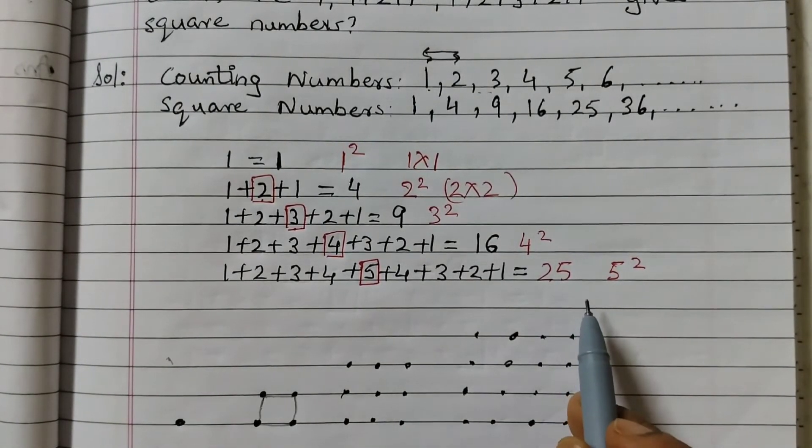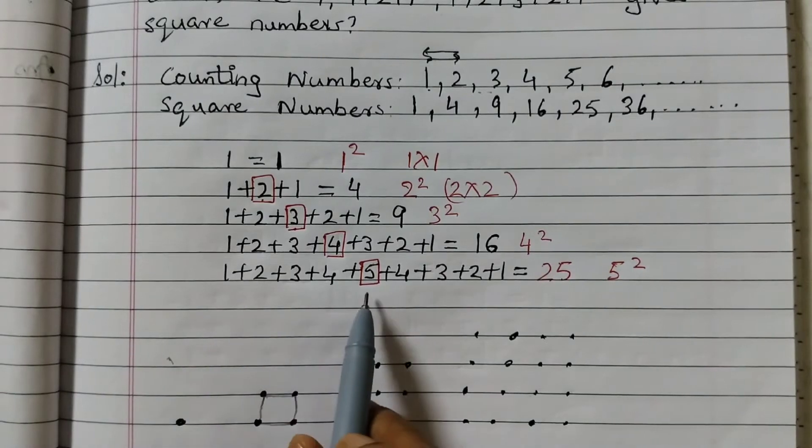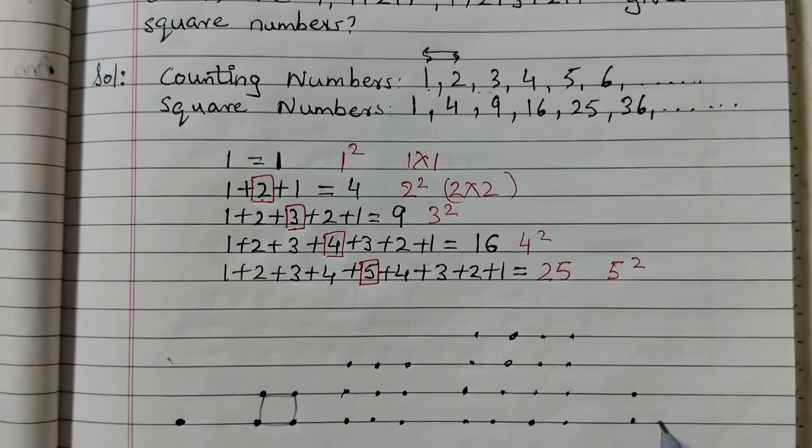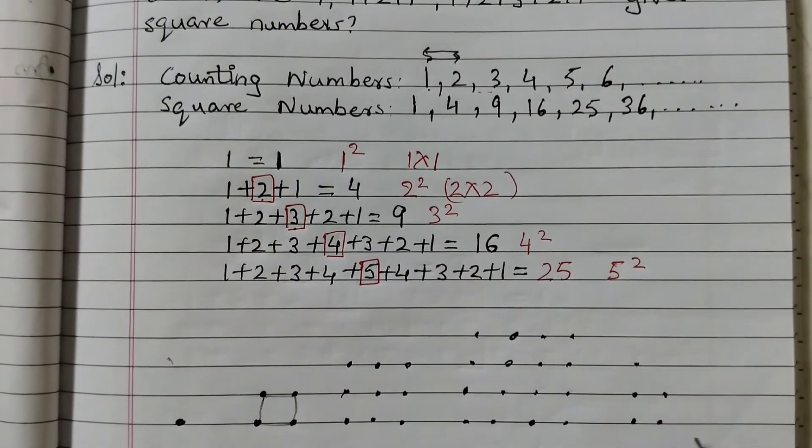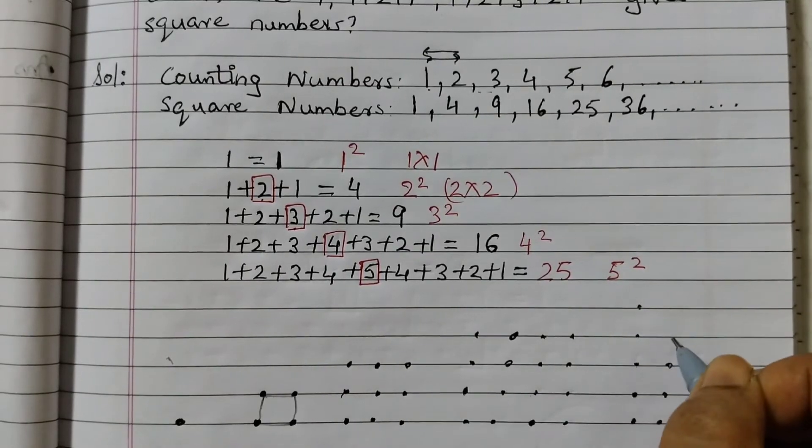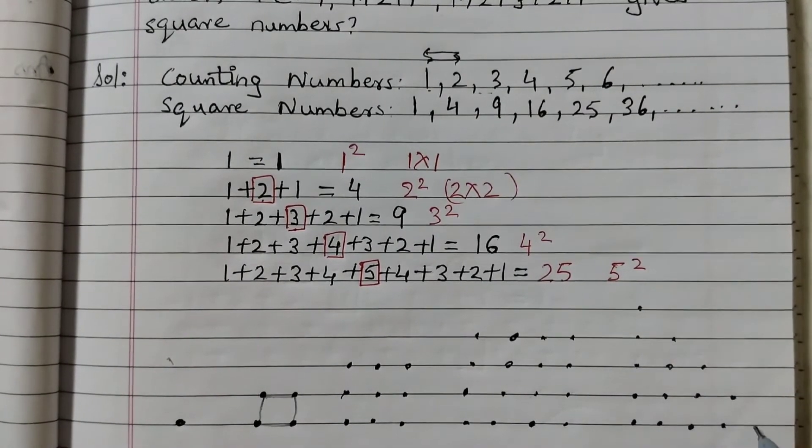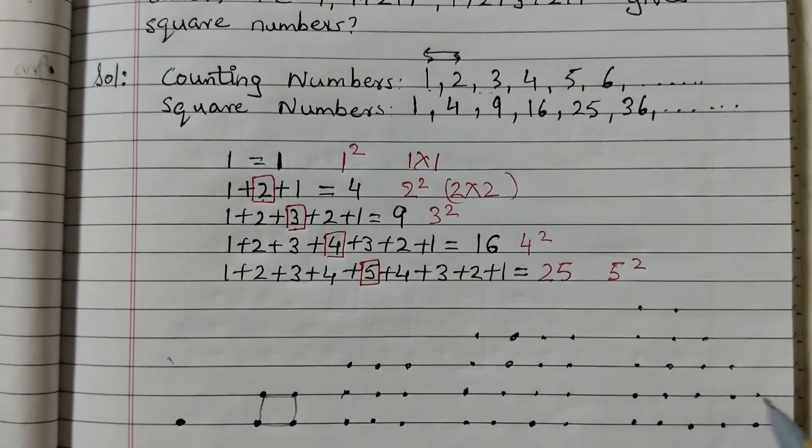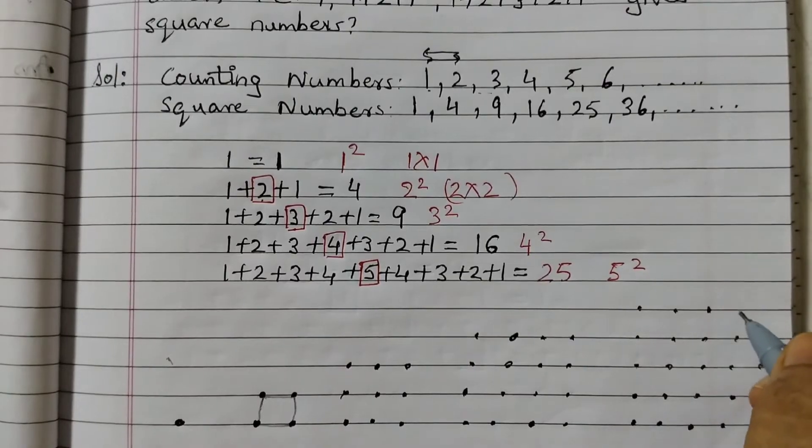For 5 also, same way you have to do. Start from 1, go till 5 and then back to 1. So 1, 2, 3 dots, 4 dots, 5 dots and then again 1, 2, 3, 4, 4 dots. 1, 2, 3, 1, 2 dots, 1.